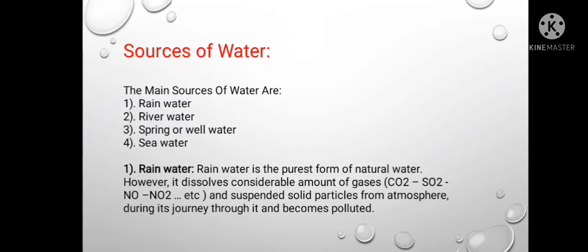Now we will see sources of water. The main sources of water are rain water, river water, spring or well water, and sea water. Rain water is the purest form of natural water. However, it dissolves a considerable amount of gases like CO2, SO2, NO, NO2 etc.